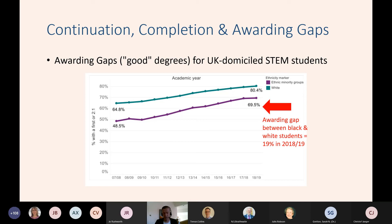These data are stark and shocking. People will try to explain some of this away by citing intersectionality with social groups, low participation neighbourhoods and so on — but you can only explain away a very small amount of this. The truth is that we're not providing our black and ethnic minority students with the environment they need to succeed. And of course, this is not just about ethnicity: we will find STEM programmes where disabled students, mature students, or other groups have an awarding gap or continuation gap — other groups of students being disadvantaged by the system.